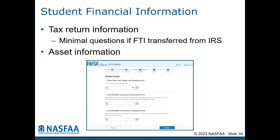We are commonly asked about what asset information needs to be included. For the student or parent, examples of assets are cash, savings, and checking accounts and the balance in these accounts at the time of FAFSA submission. Also included are the net worth of businesses and investment farms, and the net worth of investments including real estate but excluding your primary residence. Remember, not all of the asset information will apply to dependent students.